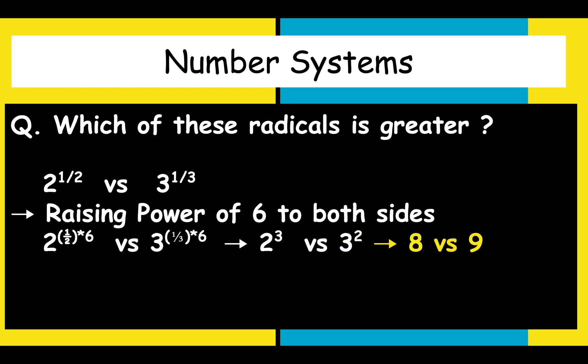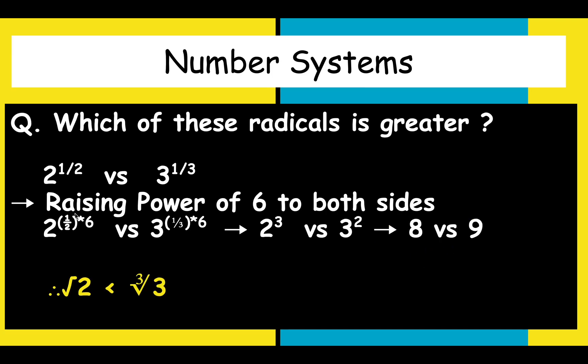Now, we can easily compute this quantity. This is LHS is 8 and RHS is 9. So, we can clearly say 8 is less than 9 or analogously square root of 2 is less than cube root of 3.